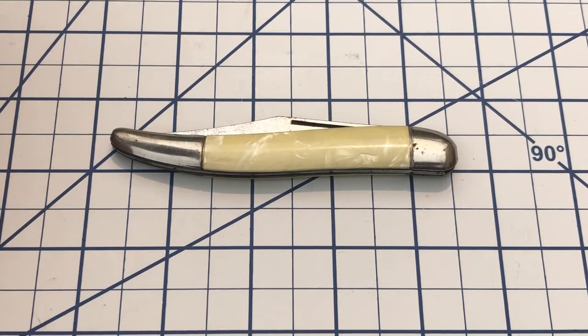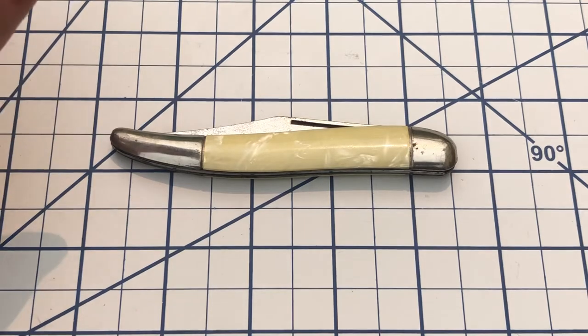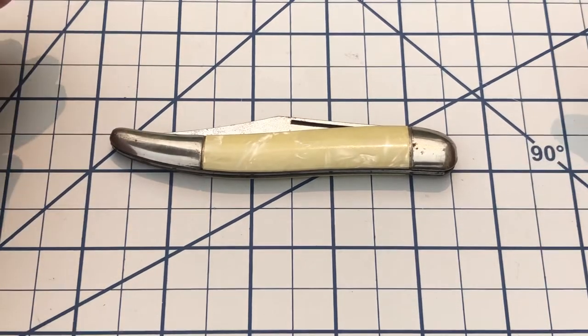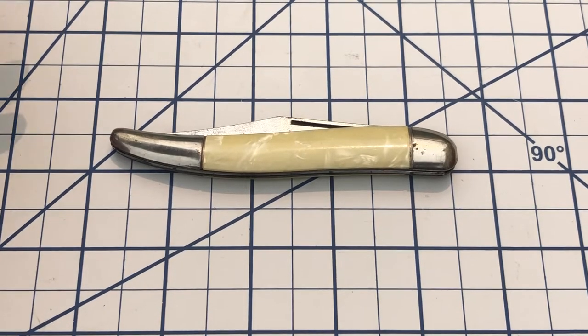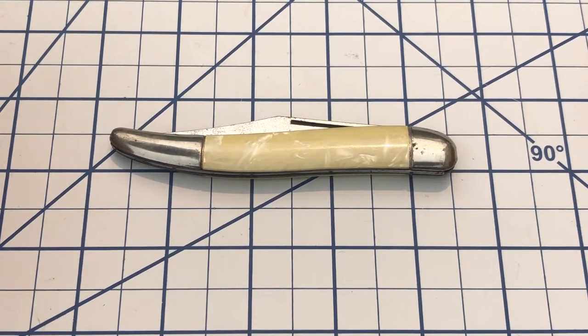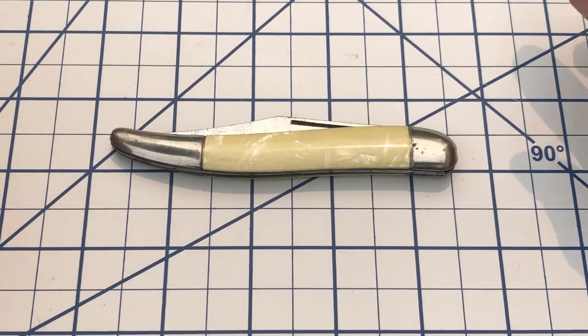One of those things I got in was a lot of four. There were two Hammer brands and two unbranded. I got it for about $20, including tax and shipping, so about $5 a piece. And so I think we're going to do a little series of vintage knife reviews.